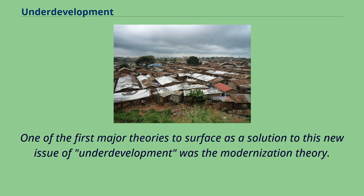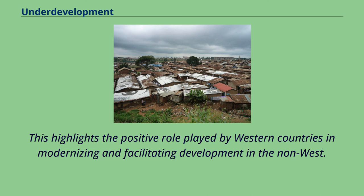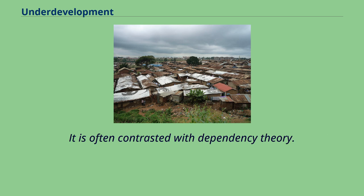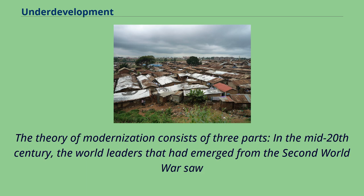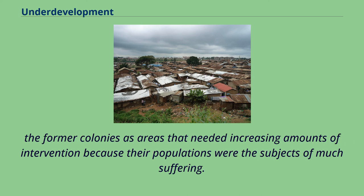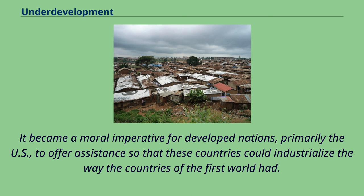One of the first major theories to surface as a solution to this new issue of underdevelopment was modernization theory. This highlights the positive role played by western countries in modernizing and facilitating development in the non-west, and is often contrasted with dependency theory. The theory of modernization consists of three parts. In the mid-20th century, world leaders that had emerged from the Second World War saw the former colonies as areas that needed increasing intervention because their populations were the subjects of much suffering. It became a moral imperative for developed nations, primarily the U.S., to offer assistance so that these countries could industrialize the way the First World had.